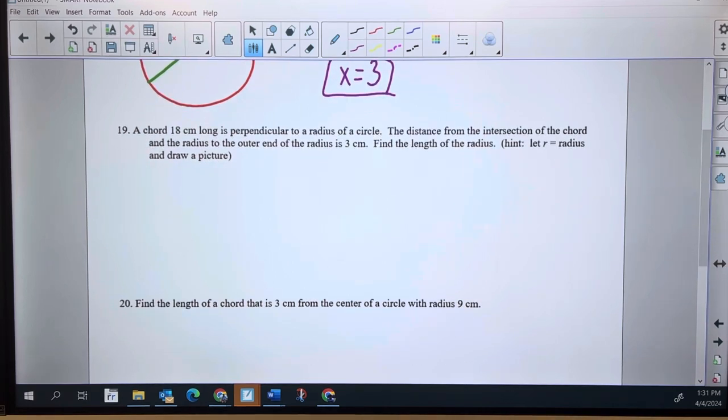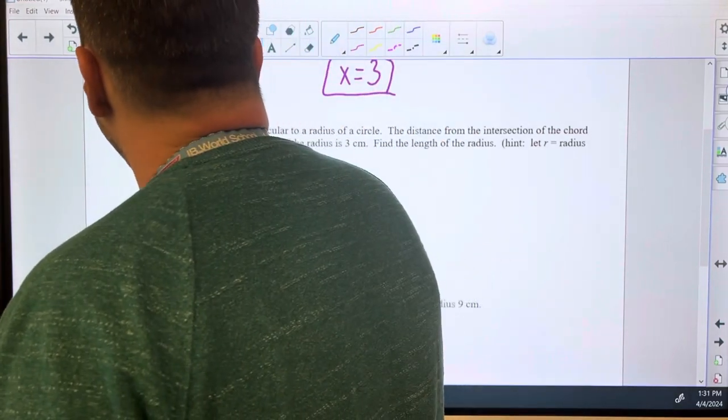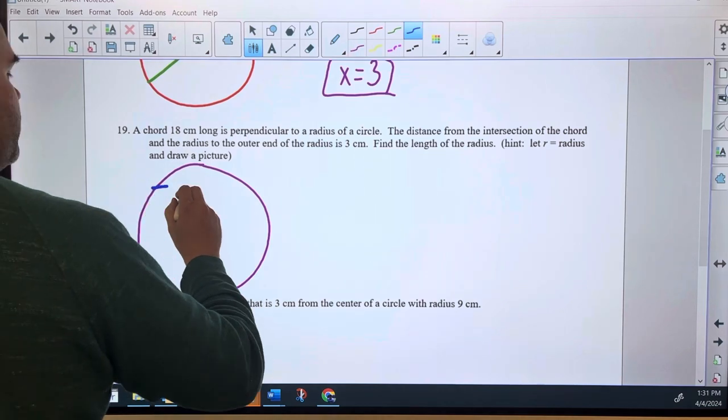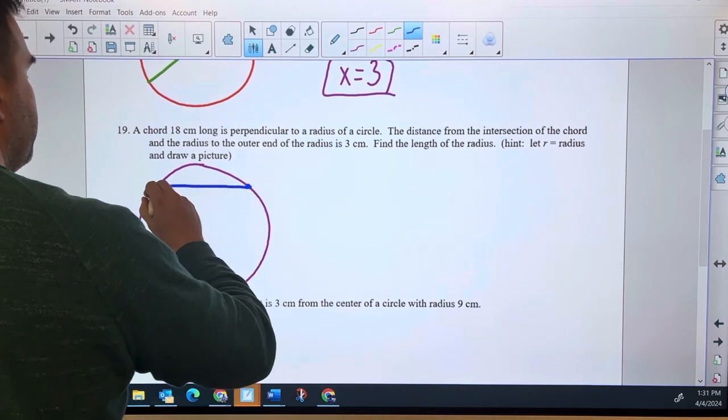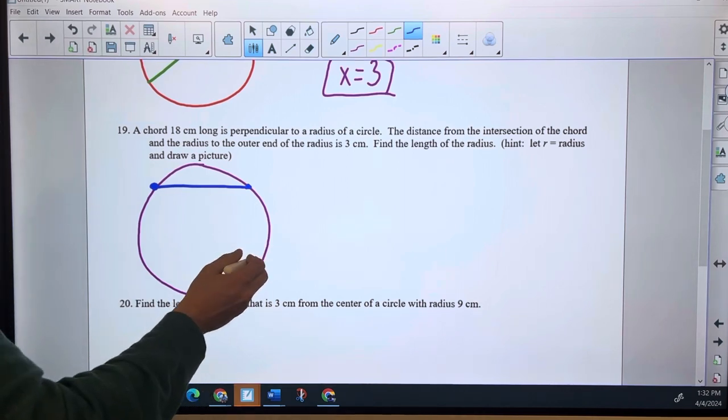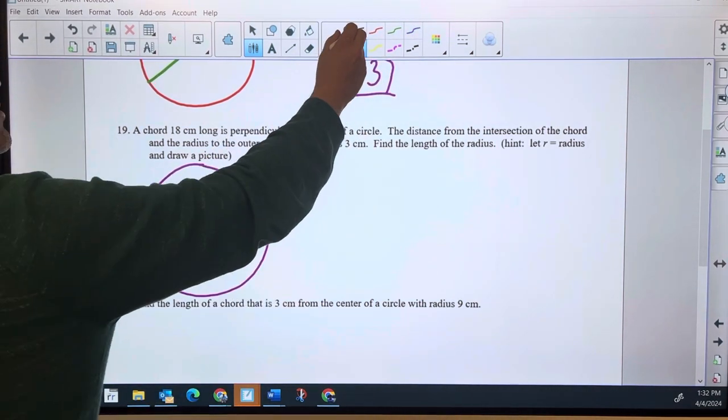A cord 18 centimeters long is perpendicular to a radius of the circle. I'm gonna go ahead and draw this. I really want to draw a picture here. Trying to do something like this and keep it in our heads is tricky to say the least. Give myself a circle to work with. We've got a cord. Draw that cord right there, it's 18 centimeters long. It's perpendicular to the radius of the circle, so now I'm going to draw the radius of that circle.